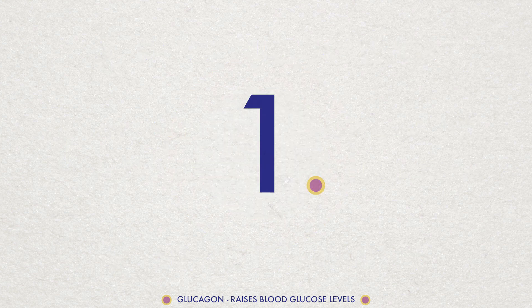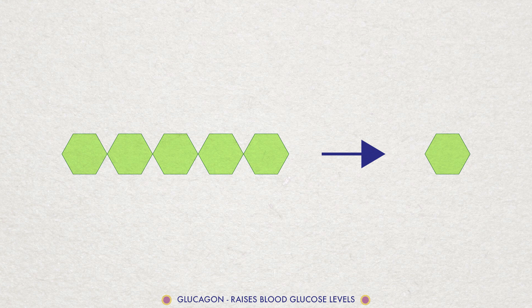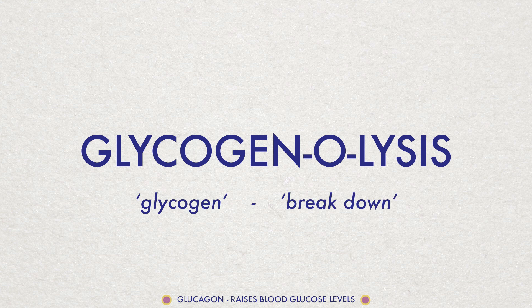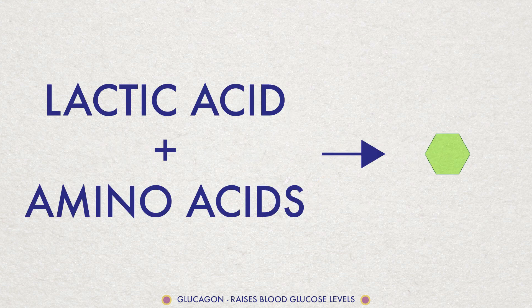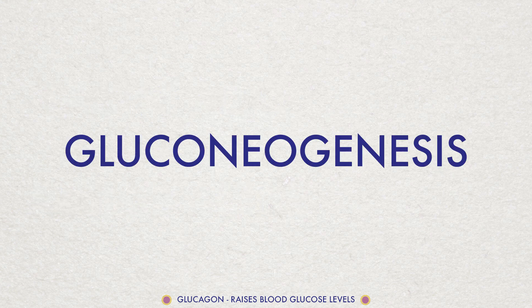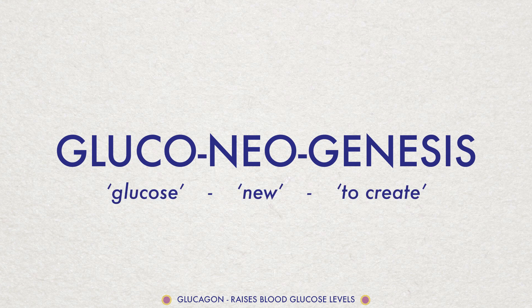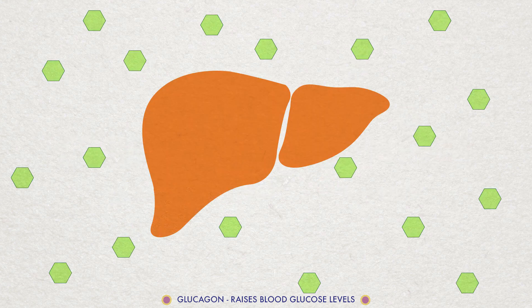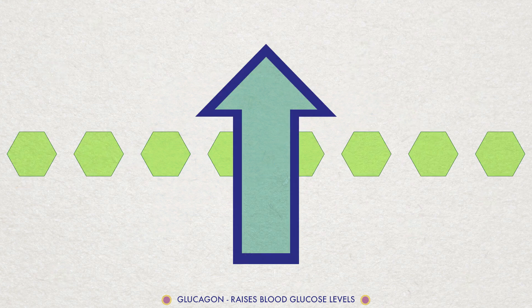The actions of glucagon include the breakdown of glycogen into glucose. This process is called glycogenolysis. Lysis meaning to break down. Synthesis of glucose from lactic acid and from certain amino acids, i.e. gluconeogenesis, the creation of glucose, and the release of glucose into the blood by liver cells, therefore causing blood glucose levels to rise.